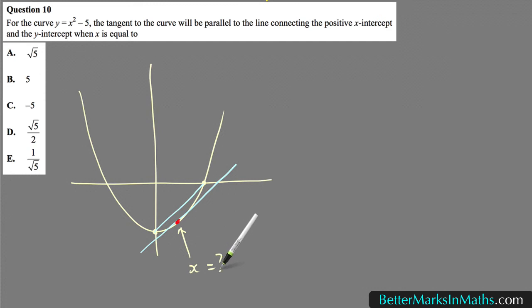So x equals what? Really, you have to work backwards from the fact that this y-intercept has a value of minus 5, and this x-intercept up here. Well, just working that out.